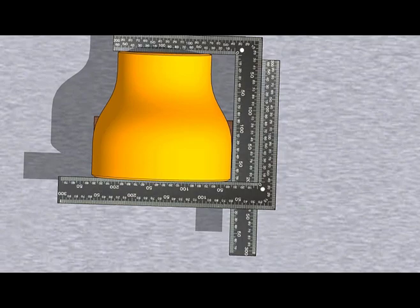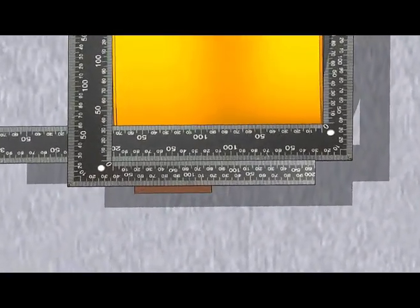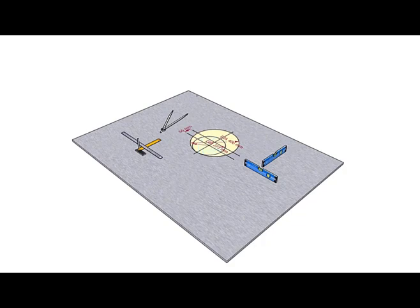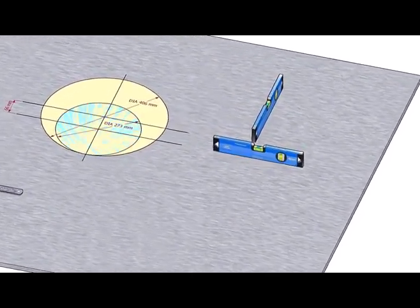Check if the other hands of the right angle are parallel to each other. The reducer is almost okay. Let us mark the center line. Check the levelness of the platform.